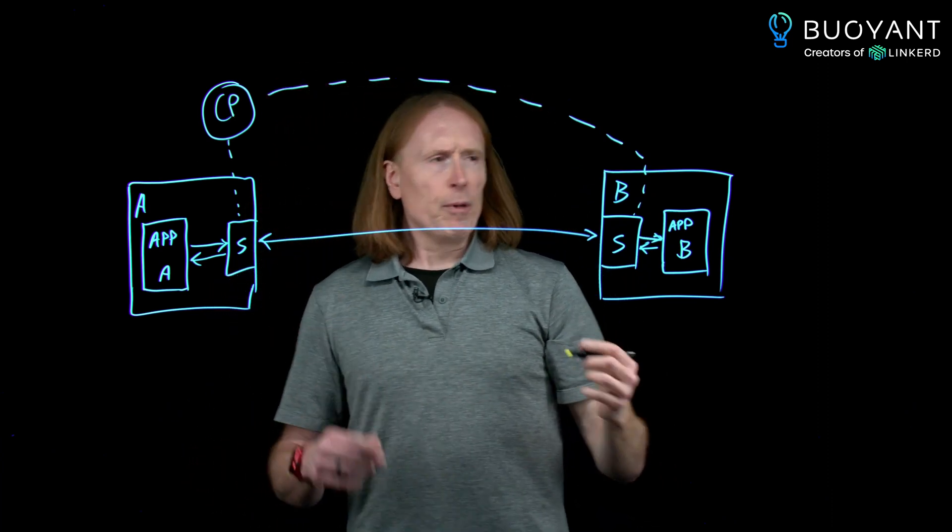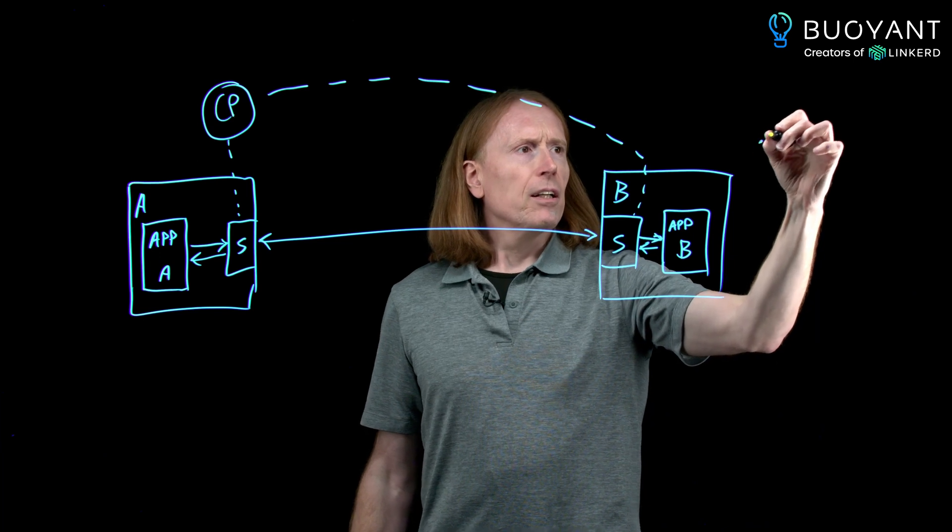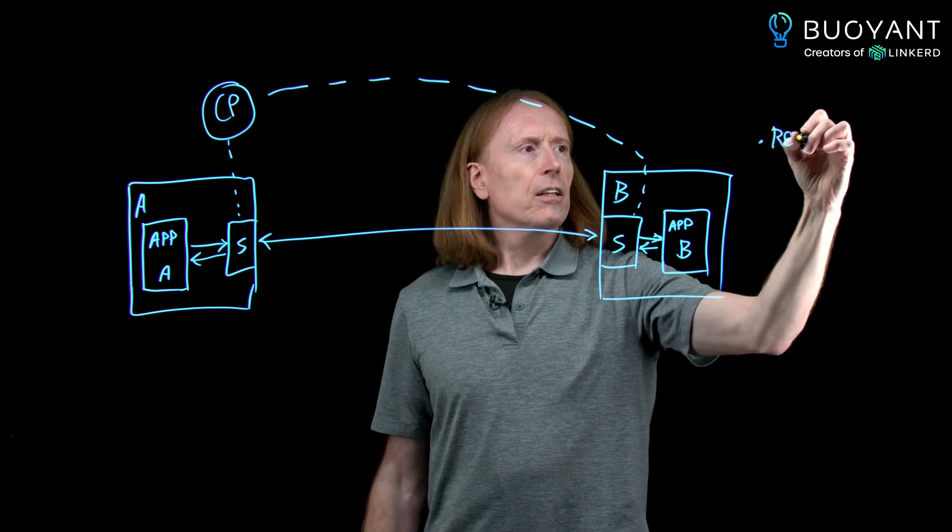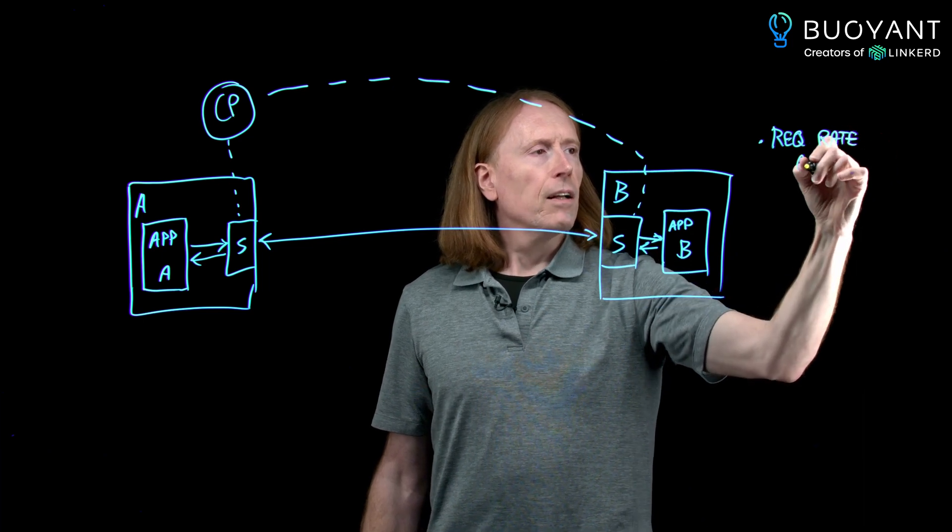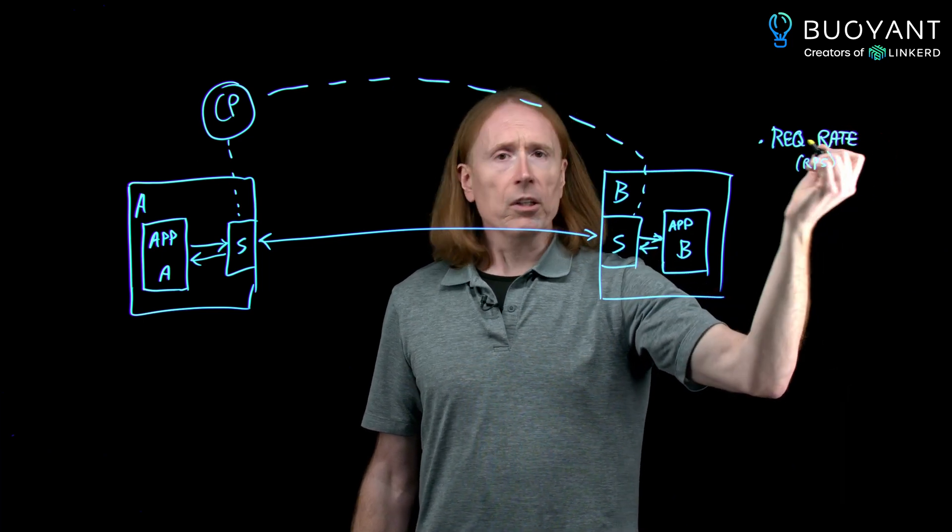Since they can see how many requests happen, they can easily calculate the request rate in requests per second. This is one of the golden metrics.